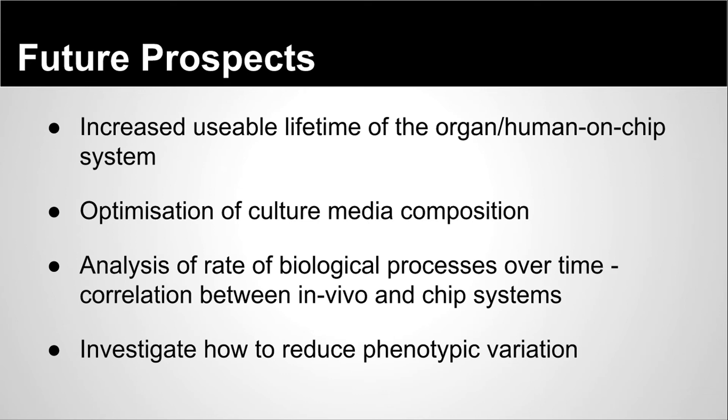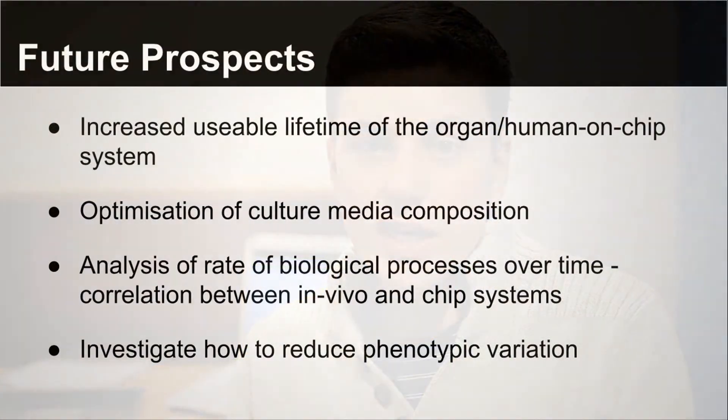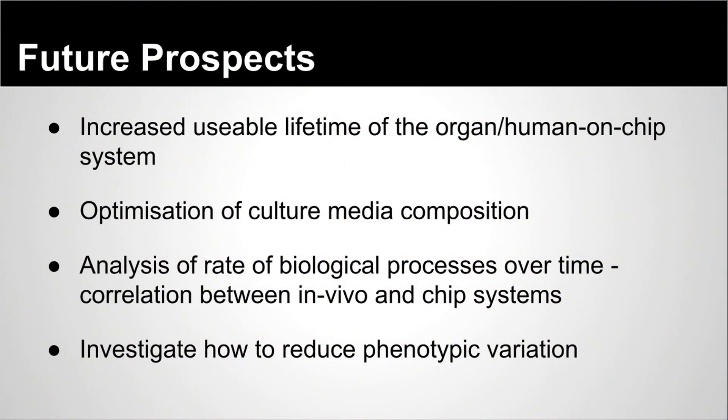Secondly, optimisation of the culture media composition is needed. Analysis of the rate of the biological processes over time, in terms of how they correlate between the in vivo and the Human on Chip systems, will also prove to be very useful in terms of analysing biological data. Finally, investigating how to reduce the phenotypic variation that was identified as a problem is one of the major milestones that will have to be overcome when improving this research.